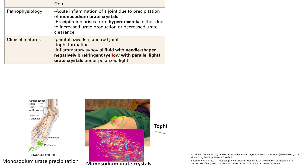If you aspirate that big red swollen joint and analyze the synovial fluid, you will see negatively birefringent needle-shaped crystals, and that is a key finding. They might not tell you it's negatively birefringent — they might just show you a picture. You have to know that it is yellow with parallel light. Negatively birefringent means yellow with parallel light; if it were positively birefringent, it would be blue with parallel light.